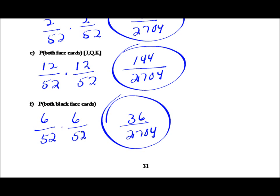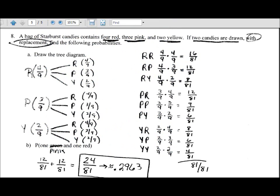Let's look at example eight. A bag of Starburst candy has four red, three pink, and two yellow. Two candies are drawn with replacement. Here's our tree diagram and sample space showing combinations: red-red, red-pink, red-yellow, pink-red, pink-pink, and pink-yellow. The probability of one pink and one red happens with R-P and P-R — twelve out of eighty-one plus twelve out of eighty-one — giving twenty-four out of eighty-one.